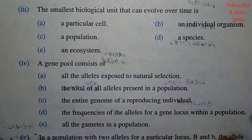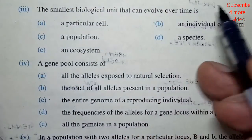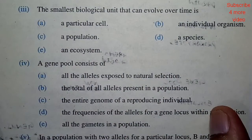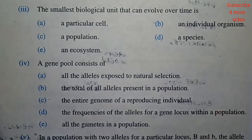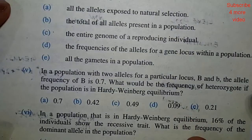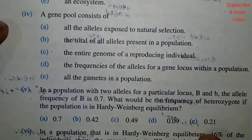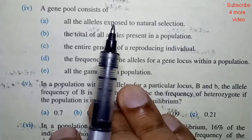The smallest biological unit that can evolve over time — this is the cell, you can take it. The cell is the first unit to evolve, so that is the closest answer.